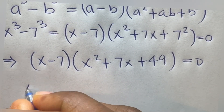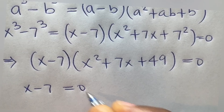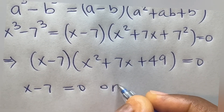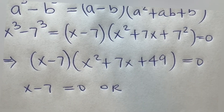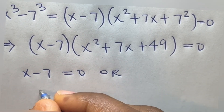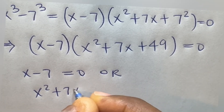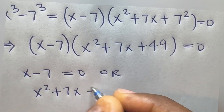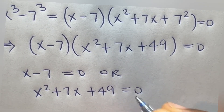So x minus 7 equals 0, giving x₁ equals 7. Or x² plus 7x plus 49 equals 0. We need to solve this quadratic equation for the remaining two solutions from Case 1.